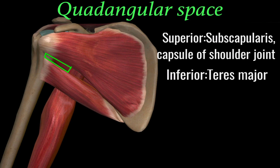As you can see in the figure, the quadrangular space is visible anteriorly too. It is bounded superiorly by the subscapularis muscle and the capsule of the shoulder joint, and inferiorly we have the teres major muscle.